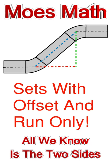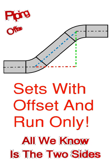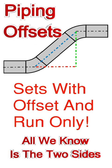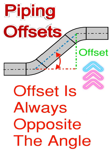We're going to find the angle of the fitting and the travel when the only thing we know of this triangle is the offset and the run. So let's discuss the sides of the triangle.